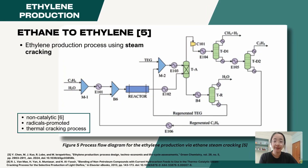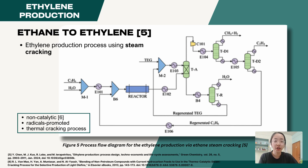After recovering ethane, ethylene production is focused on, using the steam cracking process. Currently, steam cracking is the most prevalent process for the production of light olefins, especially ethylene and propylene, with a worldwide production of more than 150 million metric tons of ethylene and propylene annually.